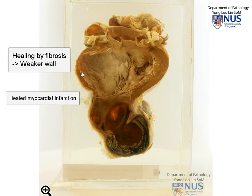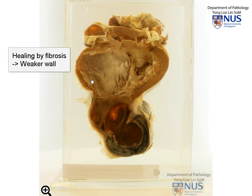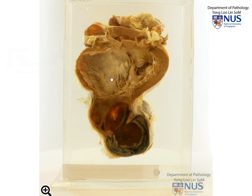Because the heart muscle is not able to regenerate, as you will learn in your chapter on healing and repair, there is fibrosis. This makes the wall thinner, weaker, as well as less elastic, and therefore prone to aneurysmal dilatation, especially because the pressure is very, very high with the blood flow within the left ventricle.